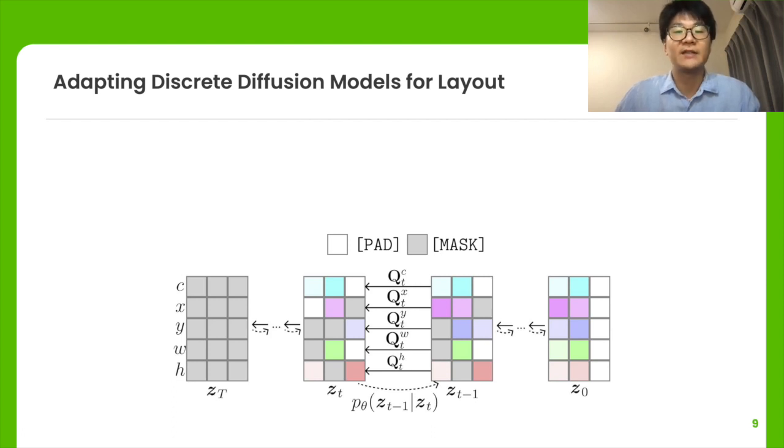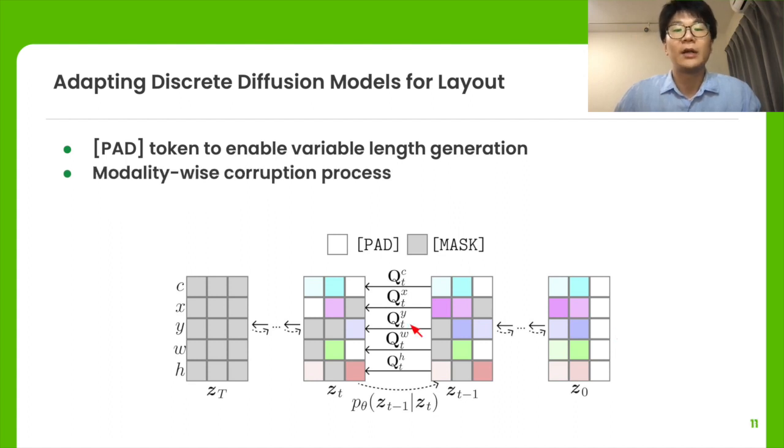There's a key distinction between LayoutDM and naively applying discrete diffusion models. Diffusion models generate fixed-dimensional data. However, each layout may contain a different number of elements. We introduce a dummy pad token and do padding for each layout. In addition, discrete diffusion models assume that all tokens are switchable by corruption. However, the layout is a mixture of tokens from multiple modalities. We consider a modality-wise corruption process to avoid invalid switching.